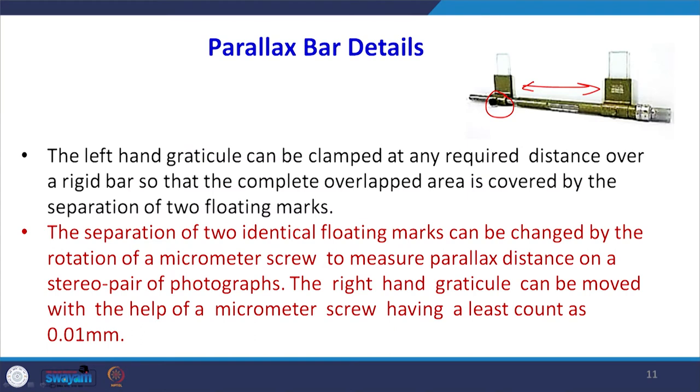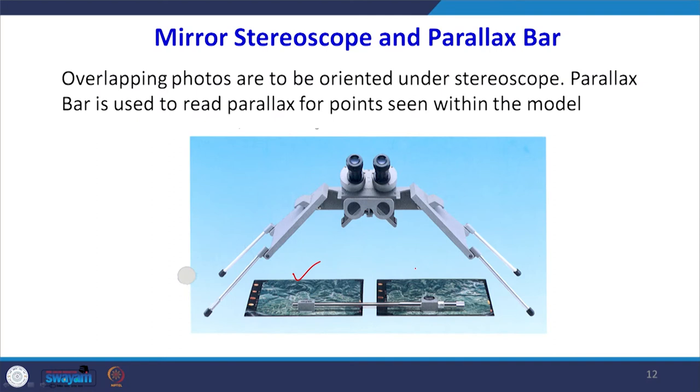Once done, you fix that distance — the extra distance will be cancelled out in mathematical calculations since we are taking the differential parallax in the observation. We use a mirror stereoscope; we have the left photograph and the right photograph, which are oriented properly in order to view the 3D model under the mirror stereoscope, and then we can use the parallax bar.